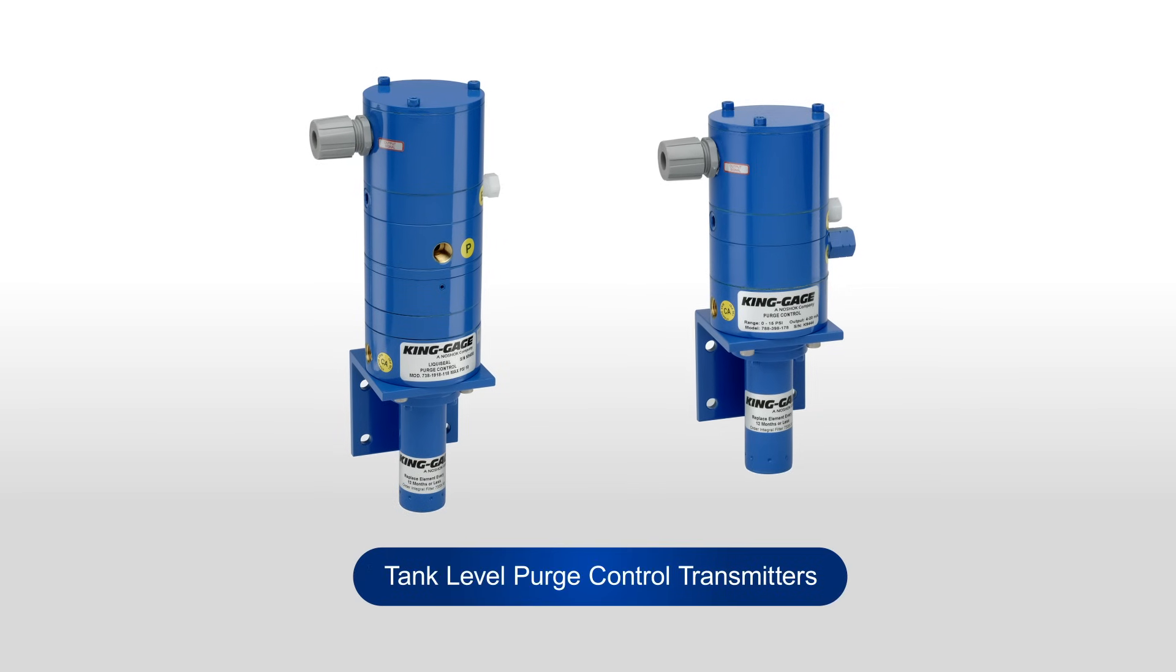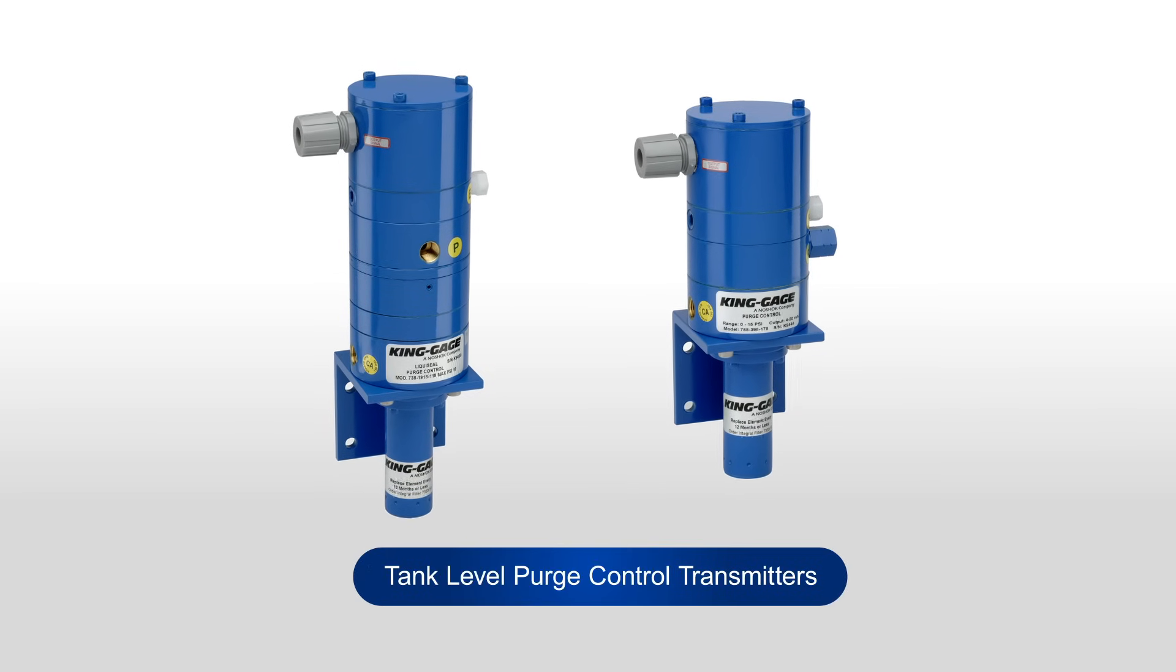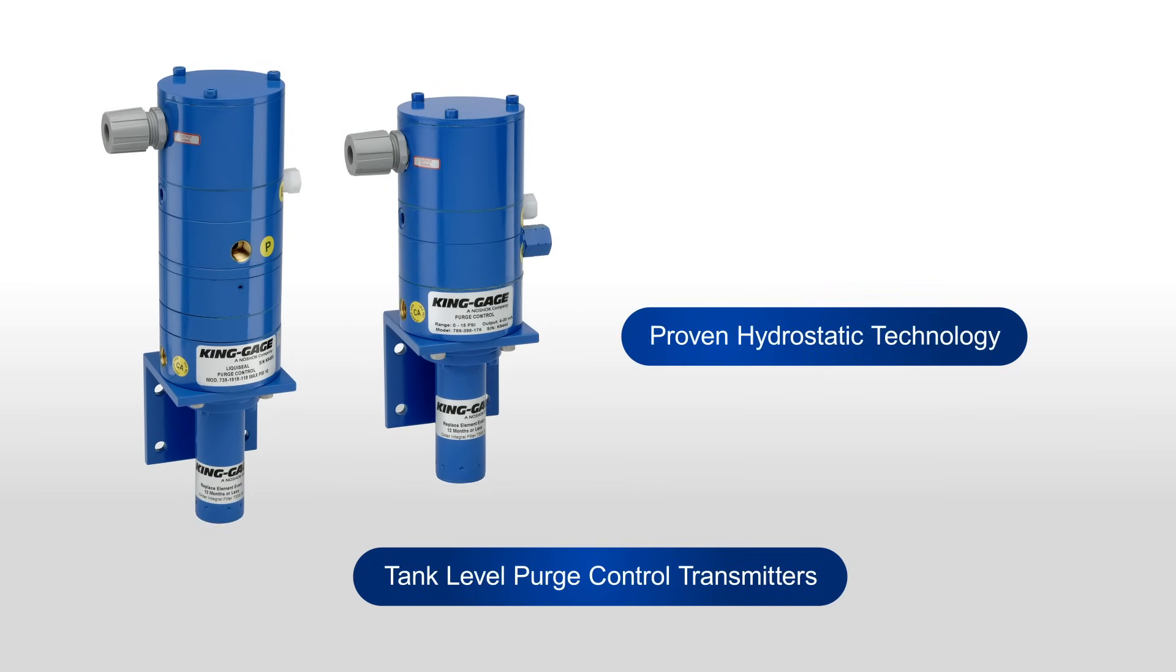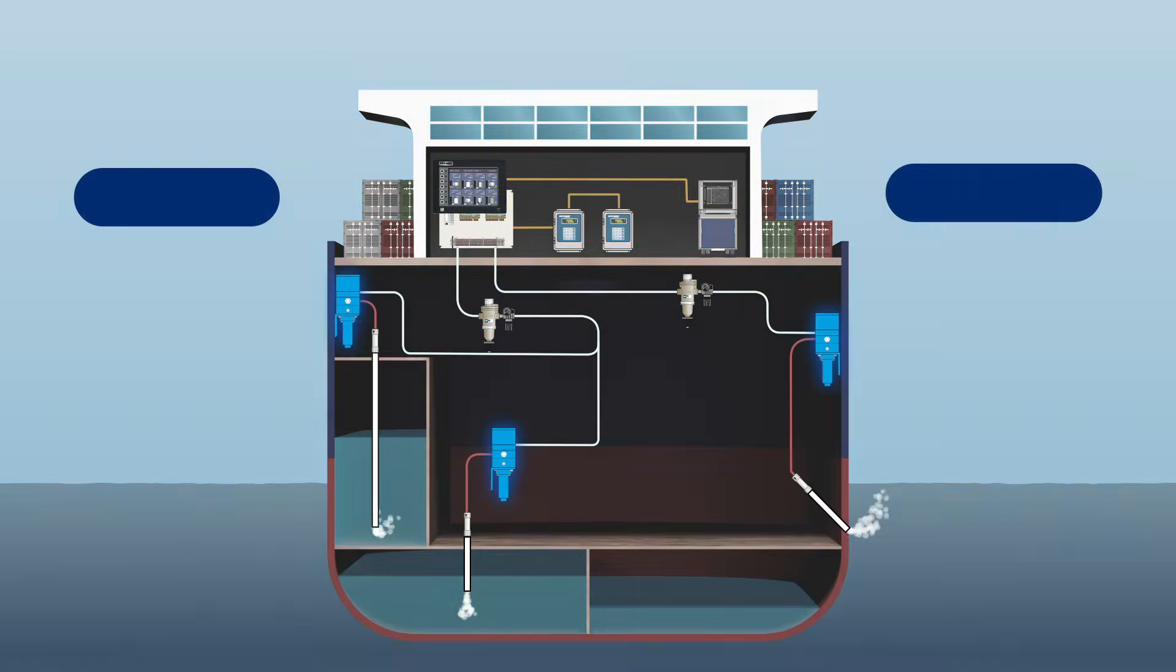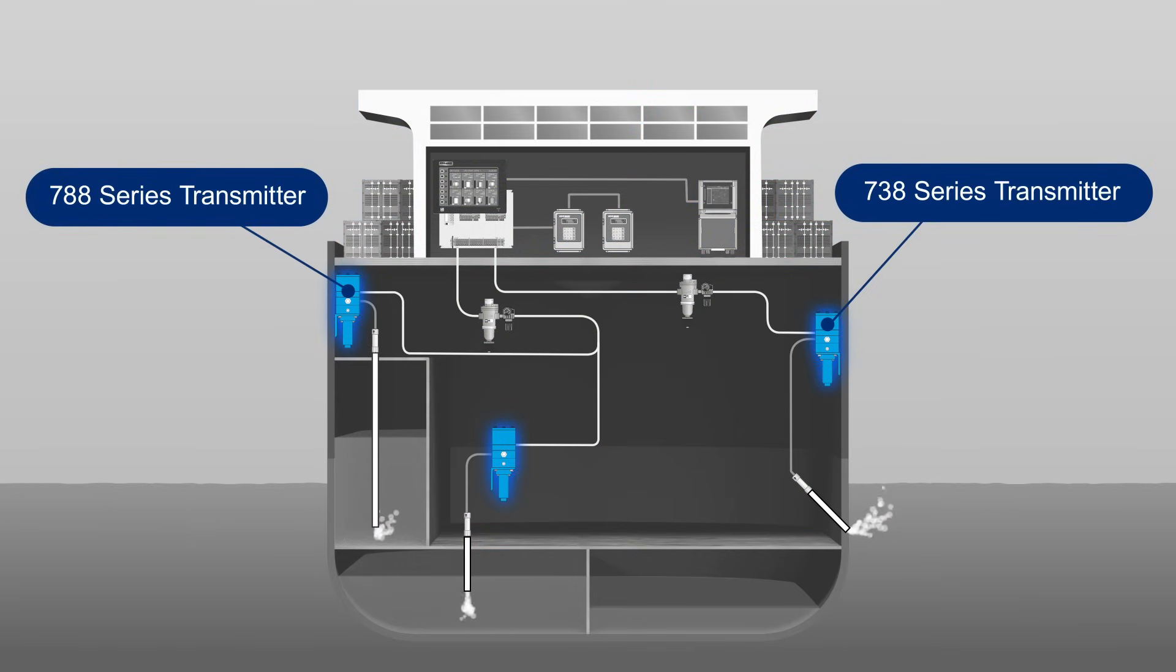King Gauge also offers a variety of tank level purge control transmitters, which provide an advanced design of proven hydrostatic or bubbler technology. These extremely rugged units can be used to sense tank levels or measure ship's draft.